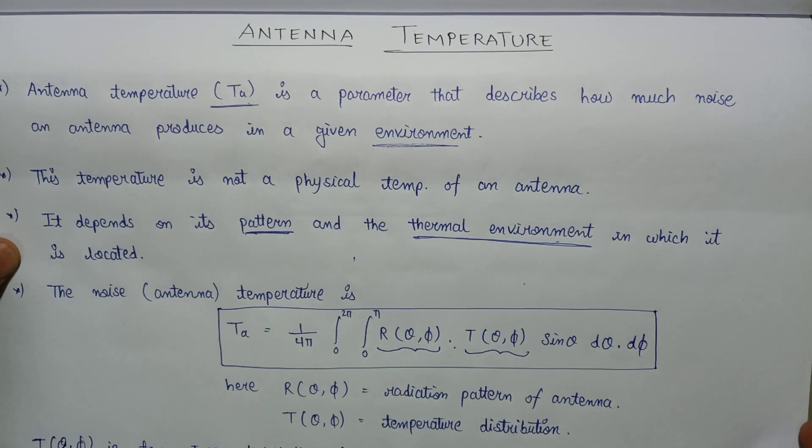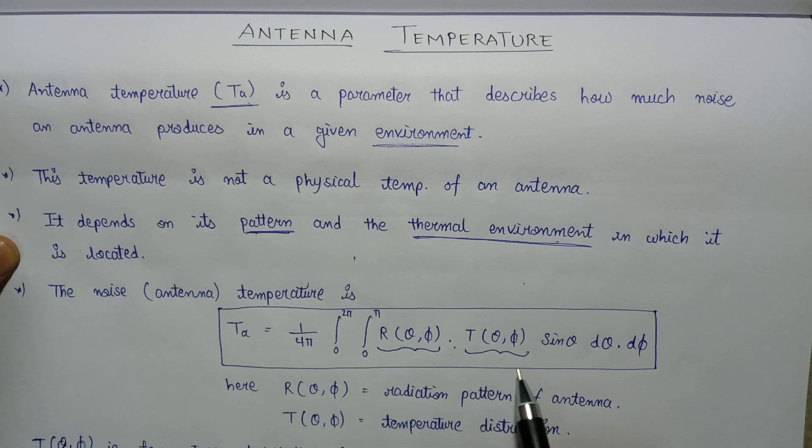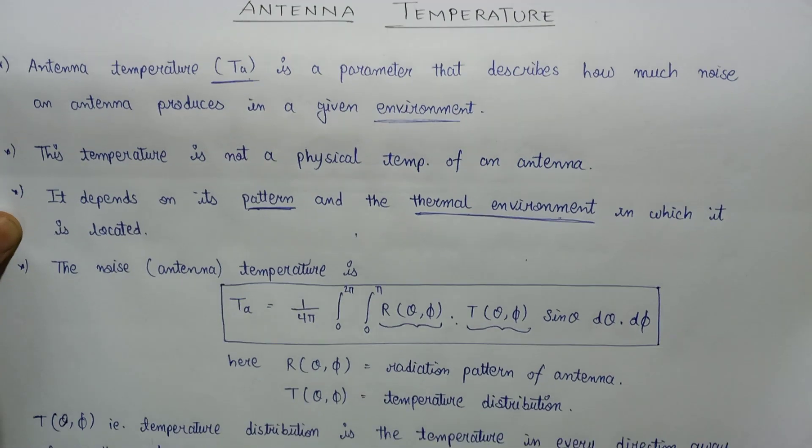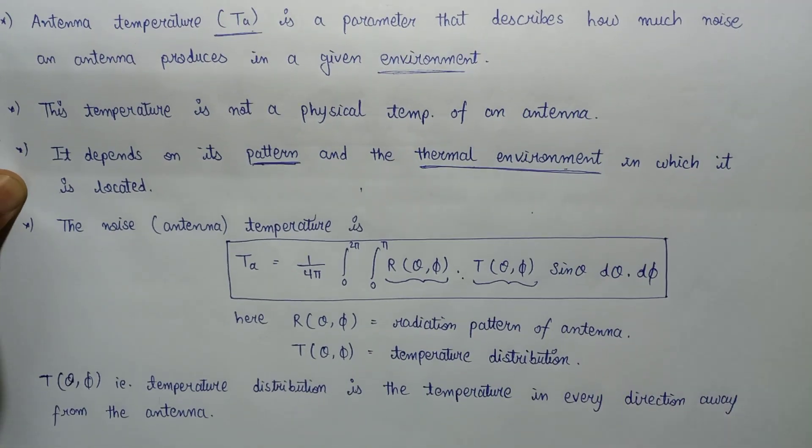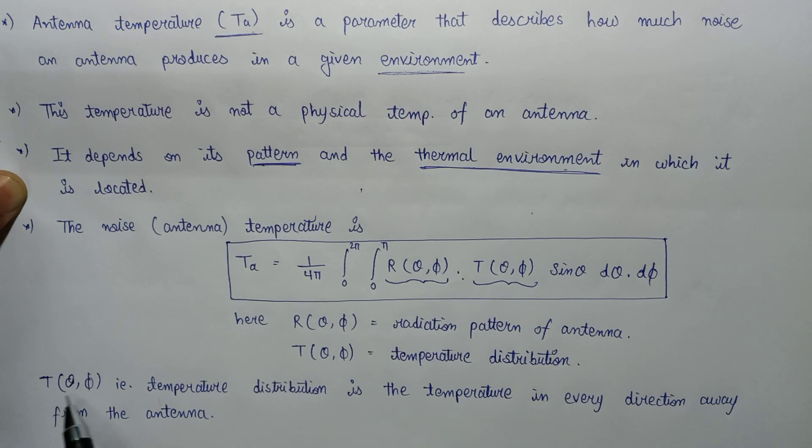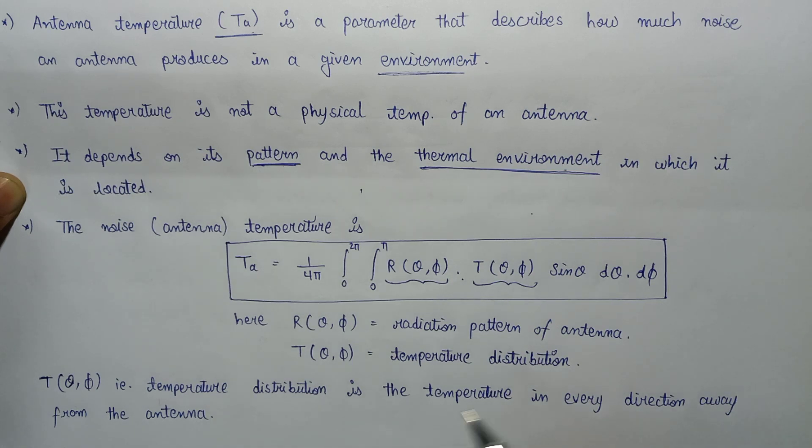T of theta phi is the temperature distribution in every direction away from the antenna. So this is the basic introduction about antenna temperature. It basically focuses on the noise that is being generated by an antenna in the given environment.